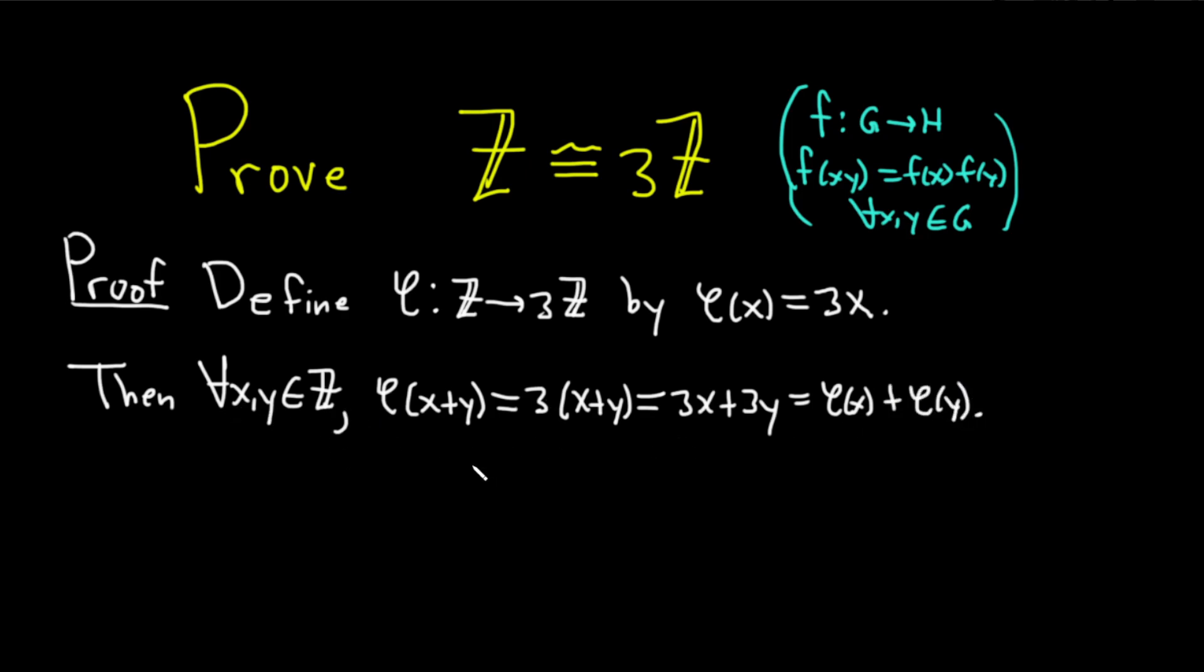So we have that for all x, y, and Z, phi of x plus y equals phi of x plus phi of y. That's exactly what we have up here with this definition of homomorphism. Hence, phi is a group homomorphism.